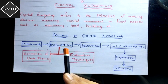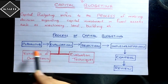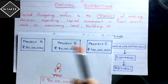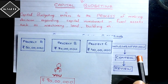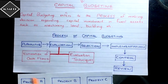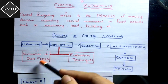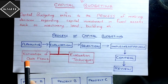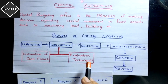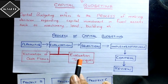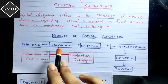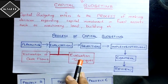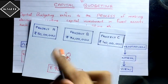The second stage is the evaluation process. In the evaluation process, we estimate the cash flows — how much we initially invest in the project, what the termination value will be, how much tax there would be, how much money will come in as inflow and go out as outflow. These are just estimates. Then we evaluate everything using evaluation techniques. This is the most crucial phase, and most of the problems in this chapter are based upon it.